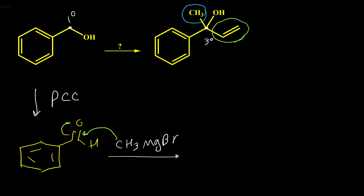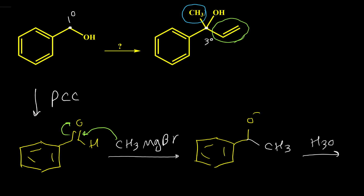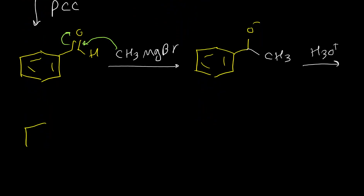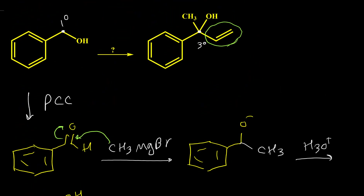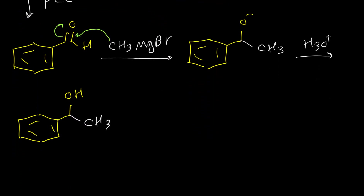Then this CH3 negative attacks here and we get O negative with CH3. Then acidifying the mixture, we get a secondary alcohol. Now we've added one of those groups to our alcohol, and then we need to add the second group. So we have a secondary alcohol right now and we need to oxidize it to the ketone.